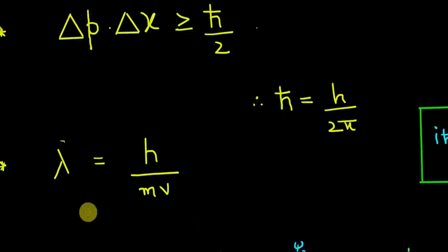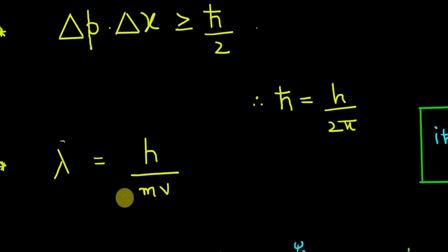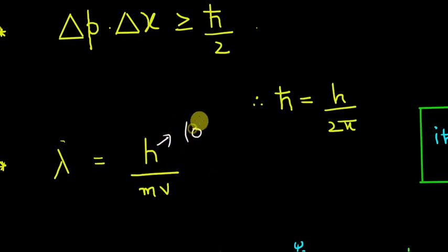Matter waves are the waves associated with matter. You might ask why the objects around you are acting like particles and not like waves. The answer is that their de Broglie wavelength is really small — they are massive and move with very low velocity, and Planck's constant h is of the order 10⁻³⁴. So the wavelength is really small at everyday dimensions.